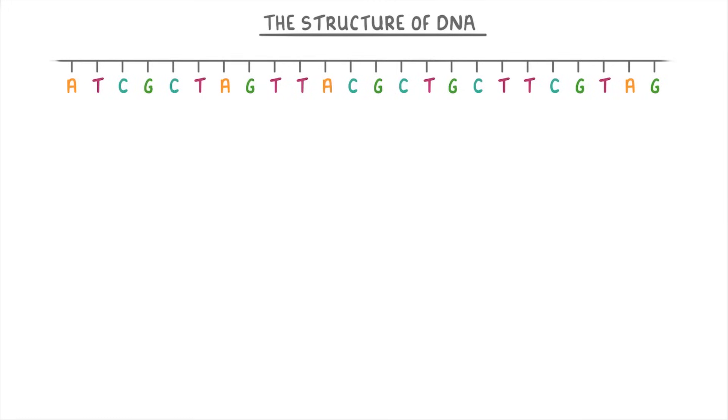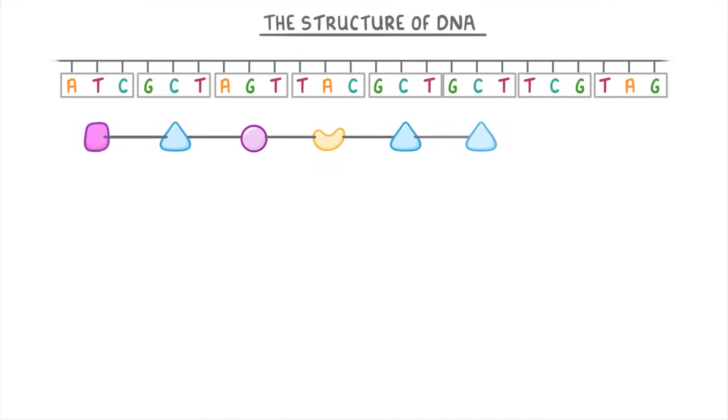First, our cells would read this DNA base sequence as a series of triplet codes, which remember are three bases each. Then it would take the amino acids that each triplet codes for and combine them all in that same order. Then lastly, this long chain of amino acids that we formed will fold up all by itself and form a protein.